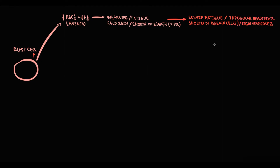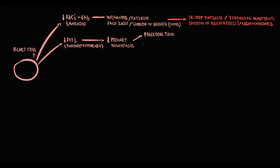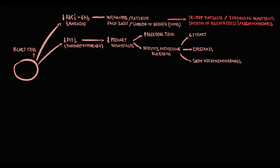With increasing blast cells, the amount of platelets decreases. Thrombocytopenia disrupts primary hemostasis, which manifests with an increase in bleeding time. It also causes bleeding from mucous membranes, primarily from the GI tract, but also frequent nosebleeds — so-called epistaxis. Microhemorrhages develop that on the skin manifest as petechiae, purpura, and ecchymosis.